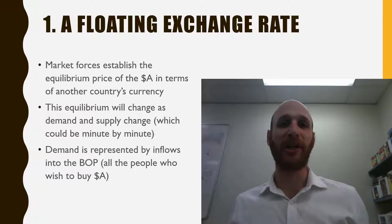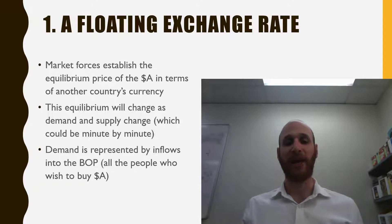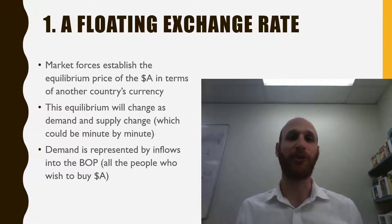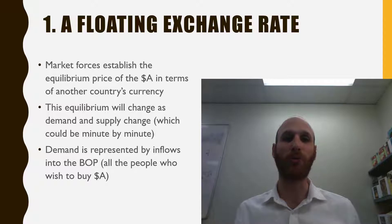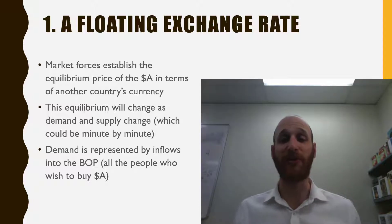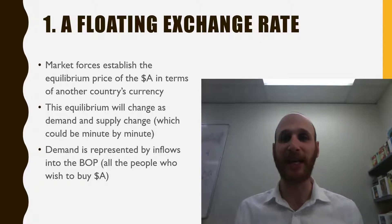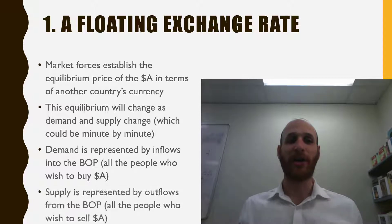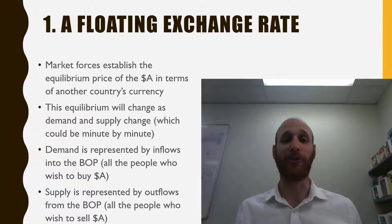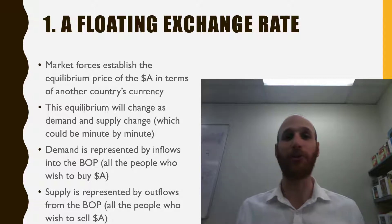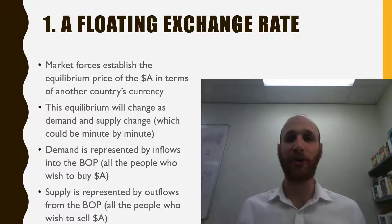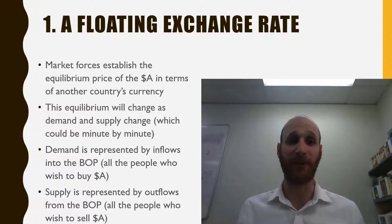Just remember with a floating exchange rate: demand is represented by inflows into the balance of payments — people who want to buy Australian dollars to purchase Australian exports or to invest in Australia. Supply is represented by outflows from the balance of payments — all the people who wish to invest overseas or to buy imports. Those outflows require people to sell Australian dollars and buy foreign currency.